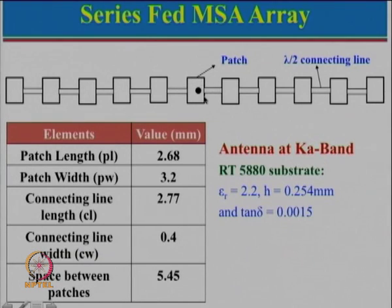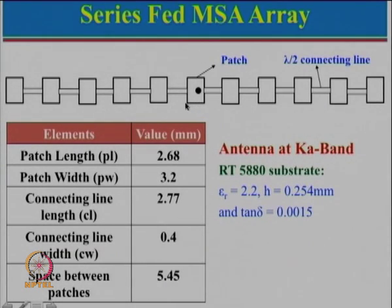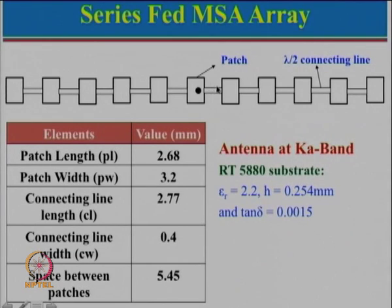Here is the radiating patch — you can see that the radiating edges are connected to the next patch. The patch length is approximately equal to lambda/2. If we say the feed is here with plus, 0, minus, we want the same thing over here: plus, 0, minus. This plus here requires a minus over there, achieved by using a lambda/2 connecting line — the length of the connecting line should be approximately equal to lambda/2.